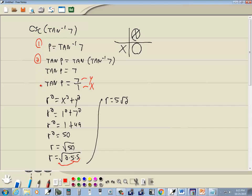Now, that x, y, and r are step 3, I should say. Now, step 4. We want to find the outer trig function, the cosecant. And cosecant is r over y. So we're going to have 5 square root of 2 over y. And y was 7. So that'd be your answer.